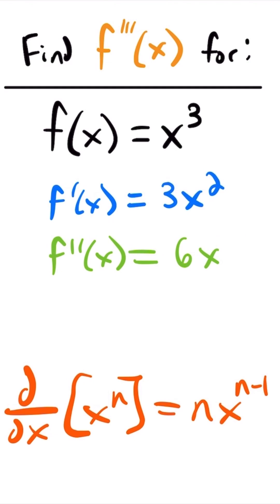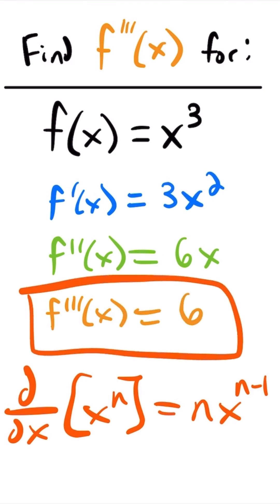And then if we take the derivative again, we will have that f triple prime of x is equal to just 6. And so that is the third derivative of this function.